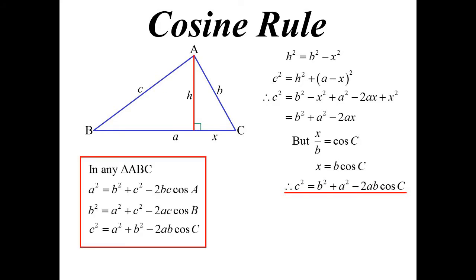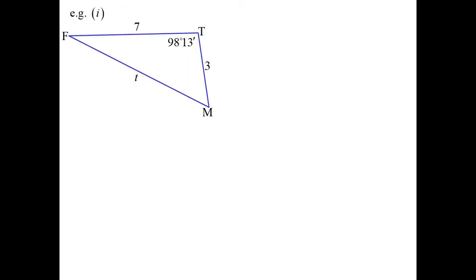So A squared is B squared plus C squared minus 2BC cos A, but it could have been B squared is A squared plus C squared. It could have been C squared is A squared plus B squared. The angle matches the side that you're trying to find. Let's do an example.